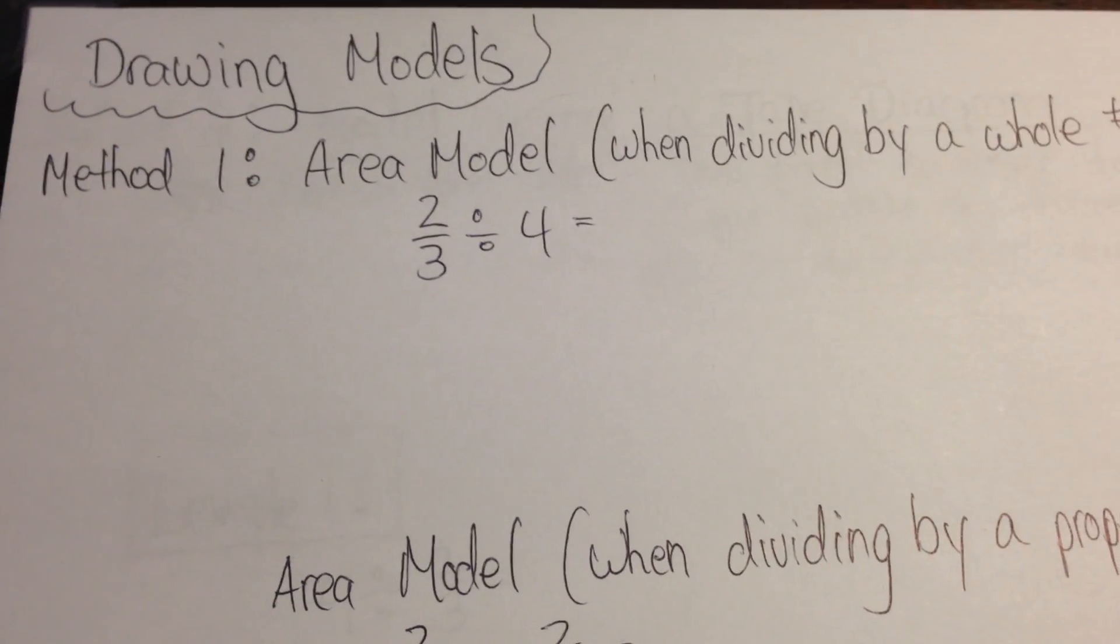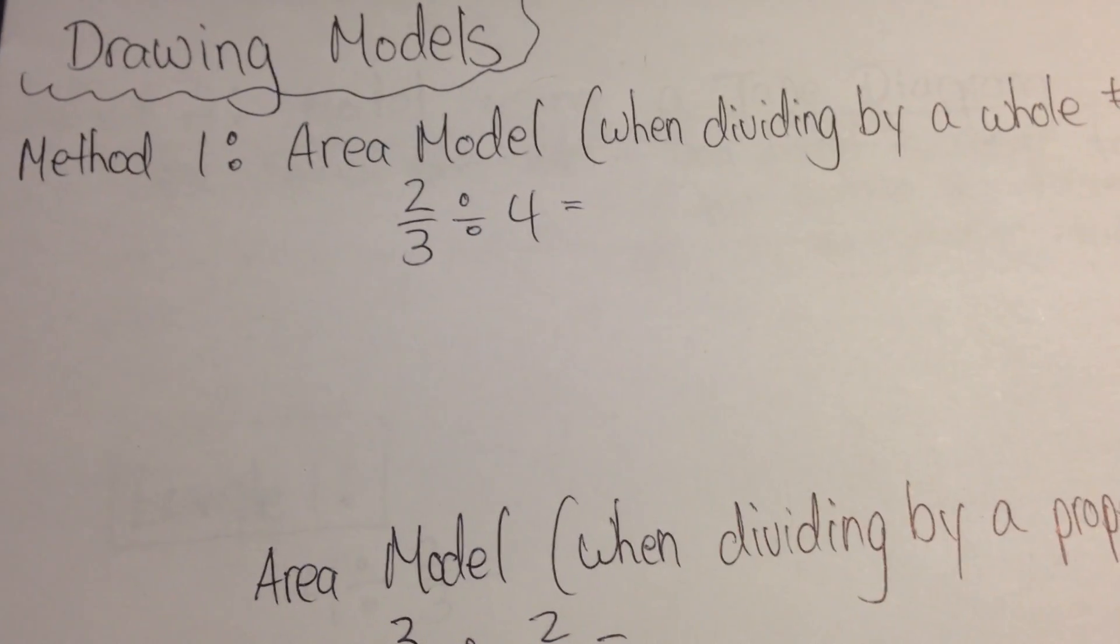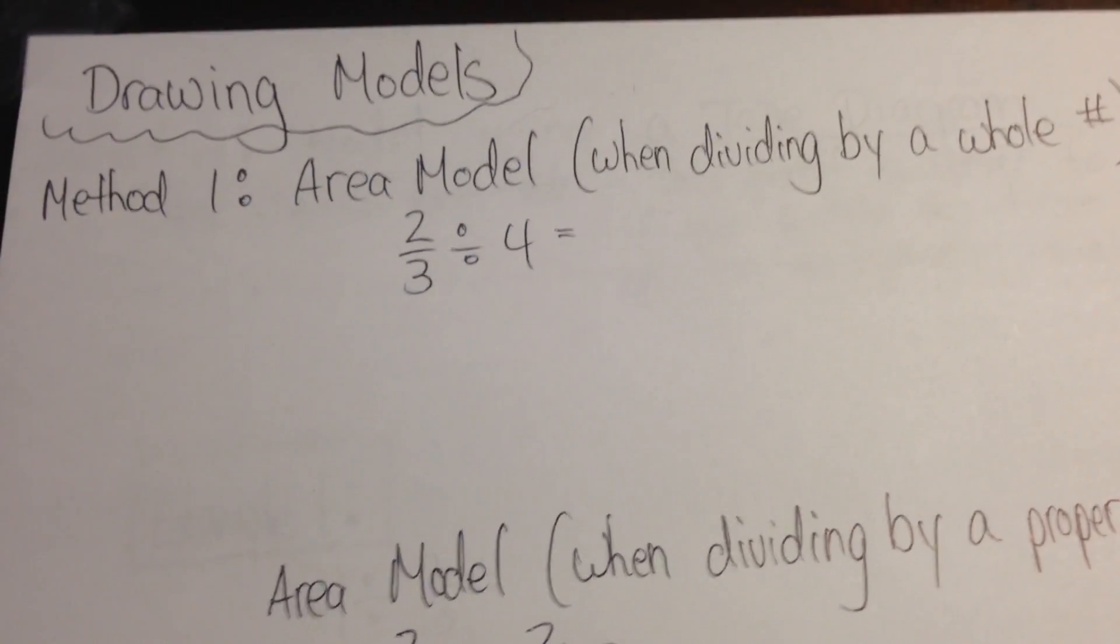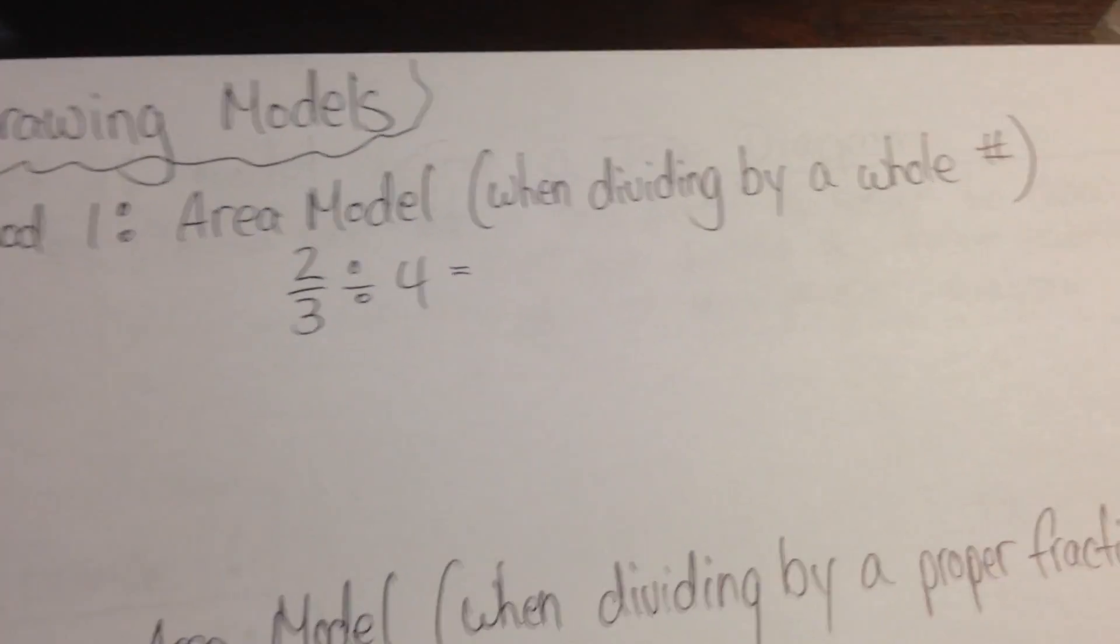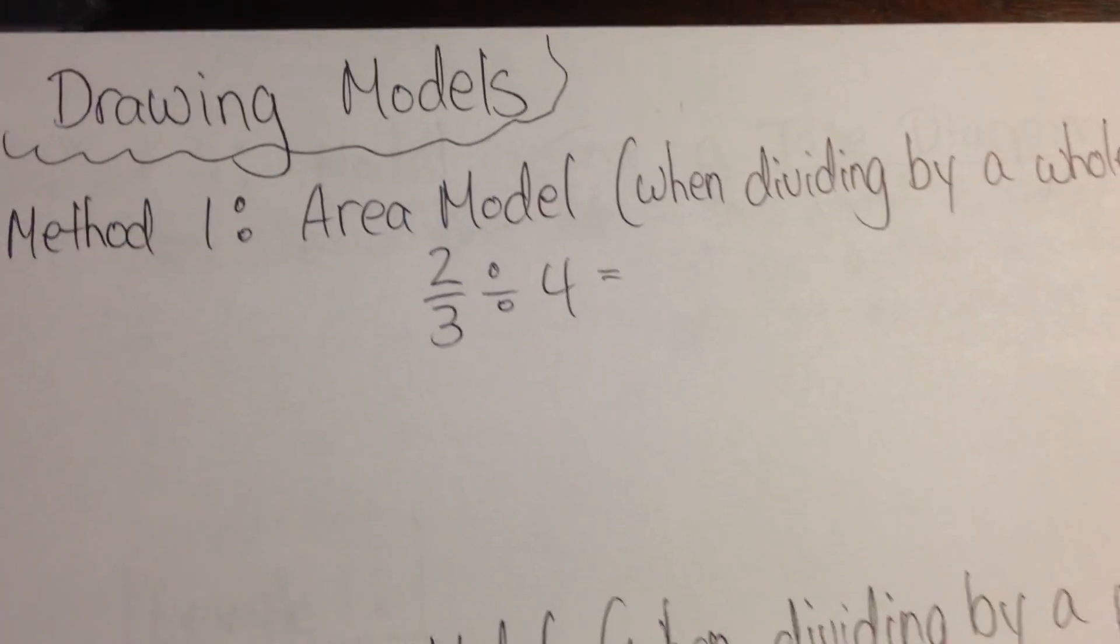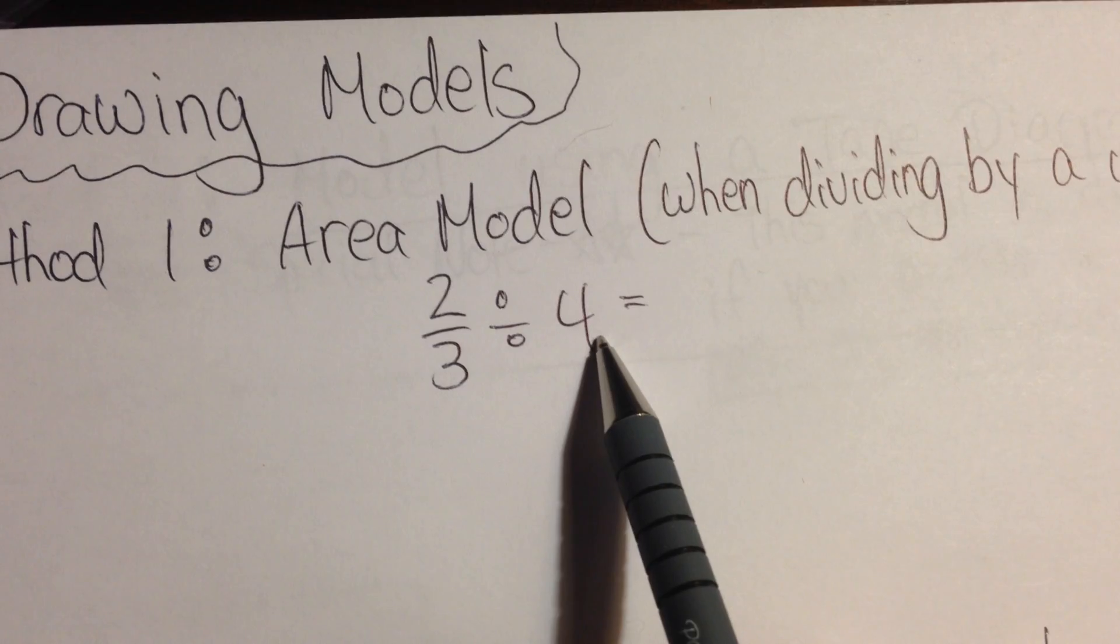The first model is actually the area model. There's all different kinds of pictures you can draw and things like this. This is just one method to use. So method 1 is the area model and we use this when dividing by a whole number. So if you look at this I have 2/3 divided by 4.